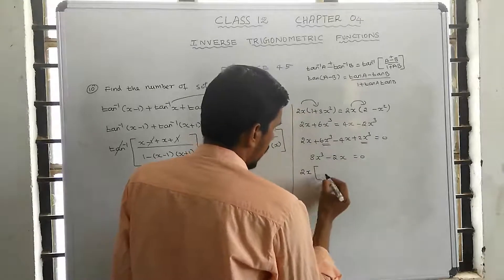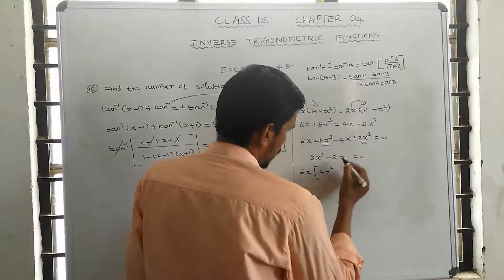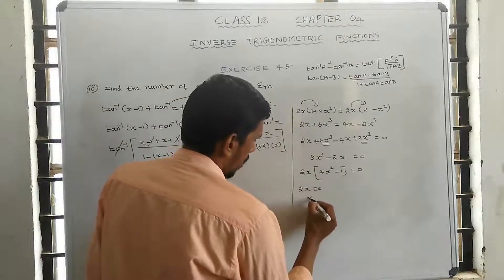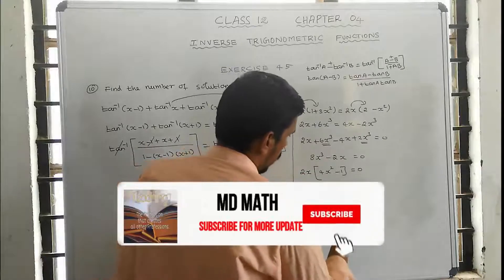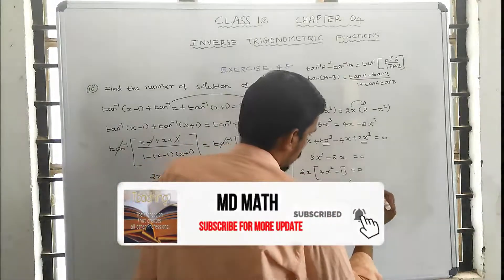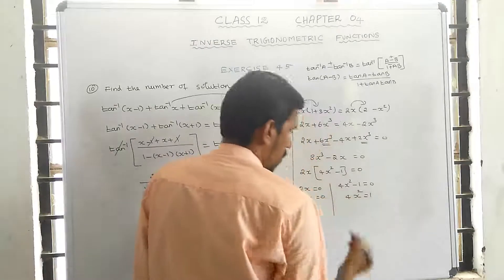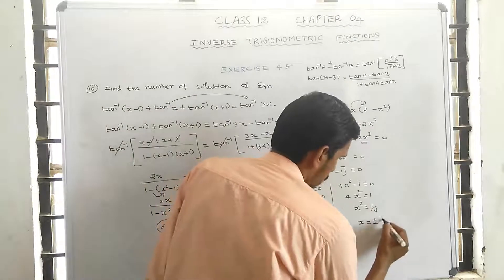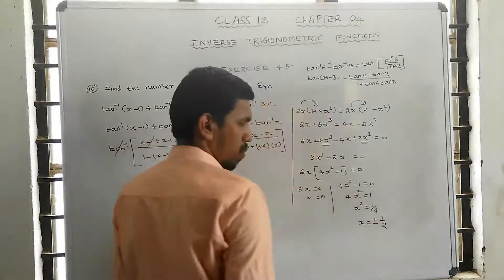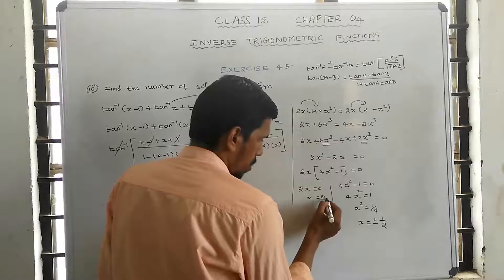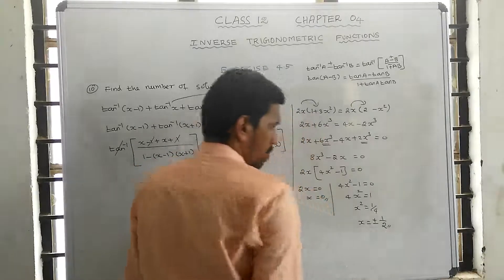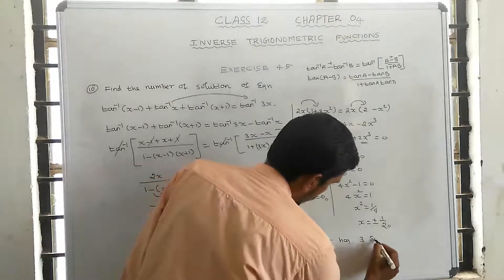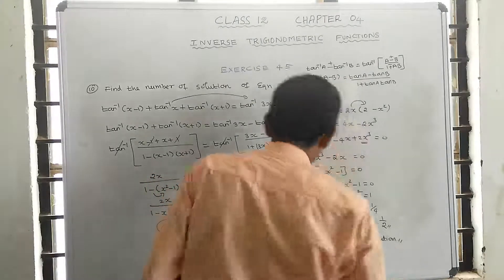Taking 2x common, the remaining factor is 4x square minus 1 equal to 0. From 2x equal to 0, x equals 0. From 4x square equal to 1, x square equal to 1 by 4, so x equals plus or minus 1 by 2. Therefore the equation has 3 solutions: 0, plus 1/2, and minus 1/2.